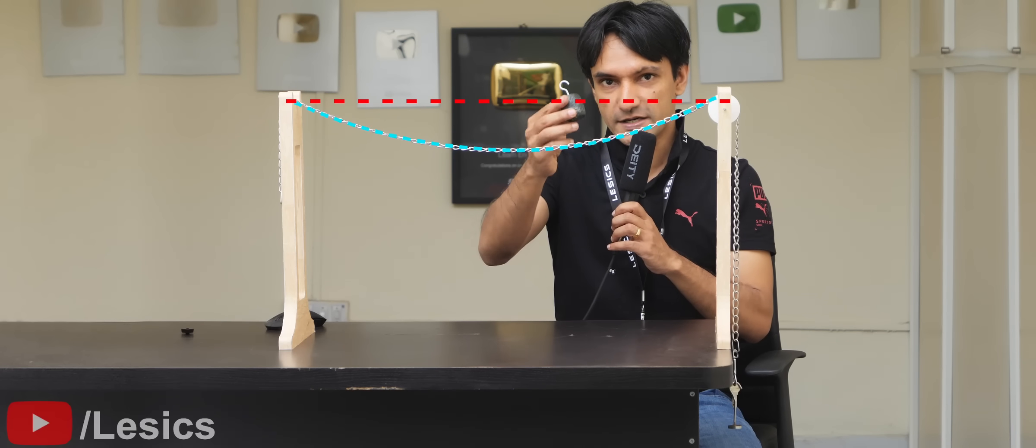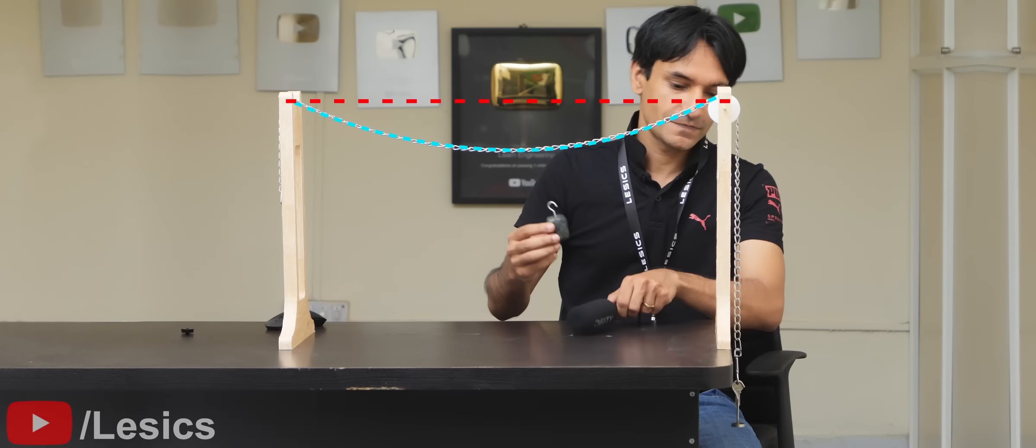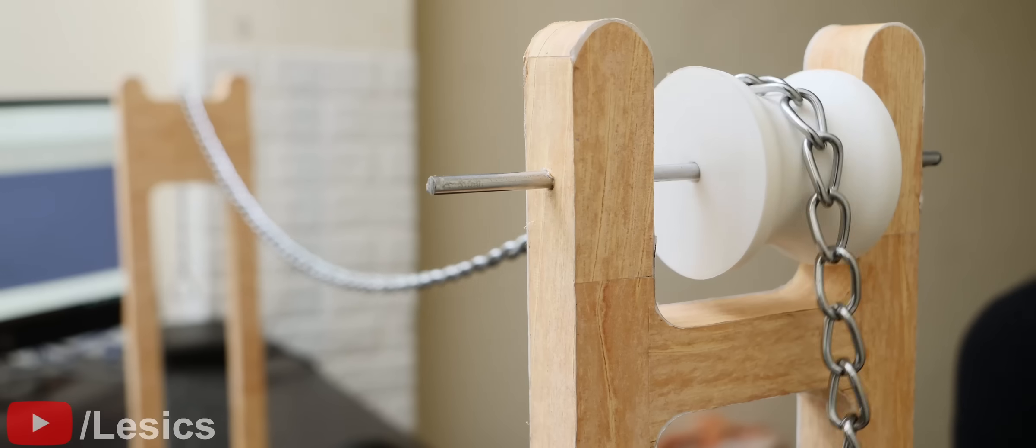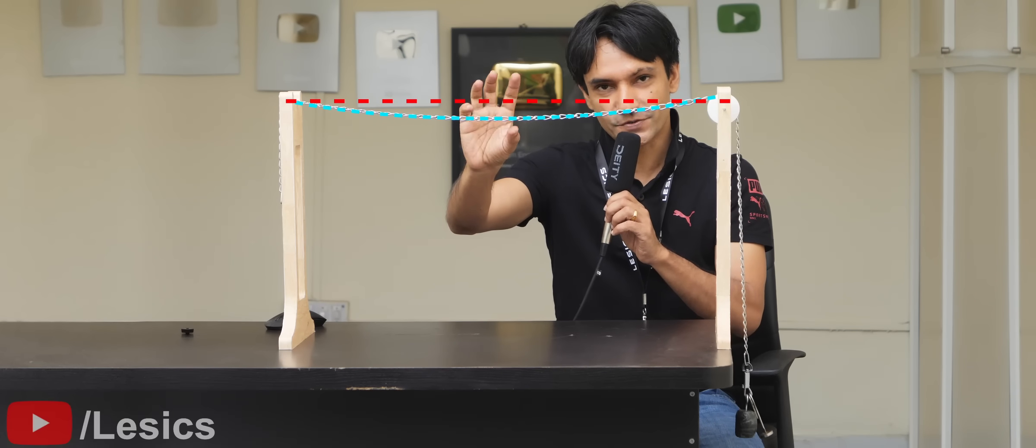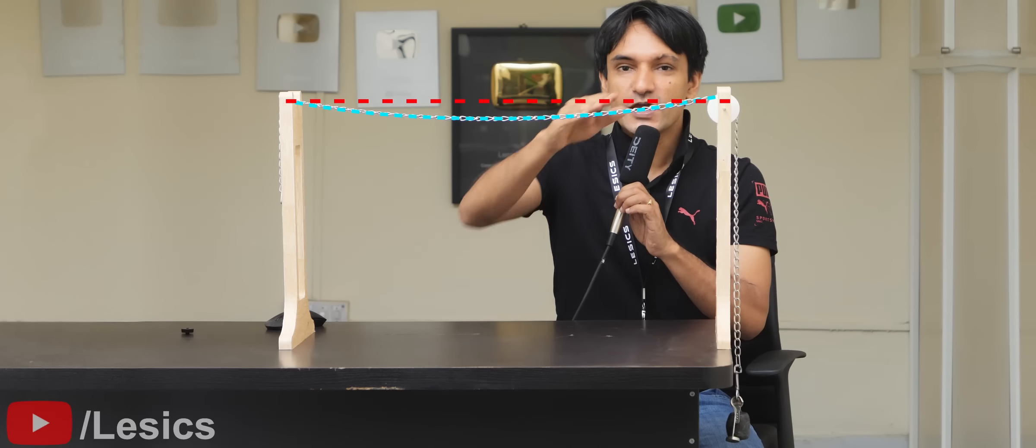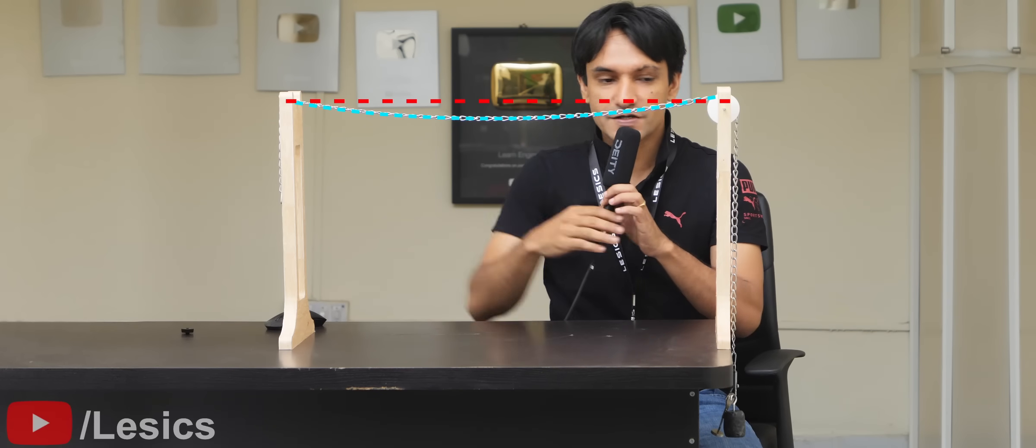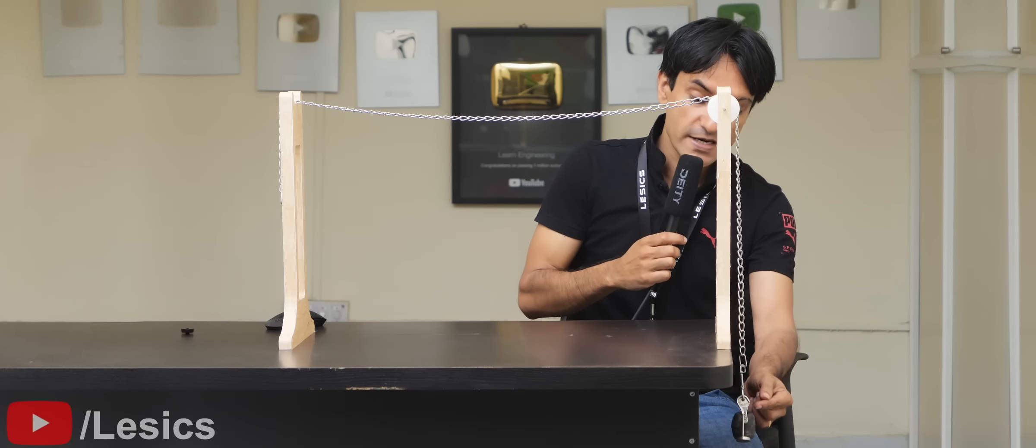Now let's add one more weight, a really heavy weight. The sag has decreased again, but not zero. This means that if you want a perfect straight line here, you have to have an infinite amount of weight at the pulley side.